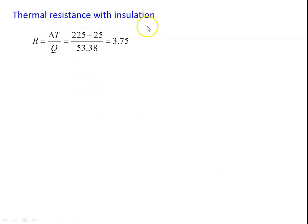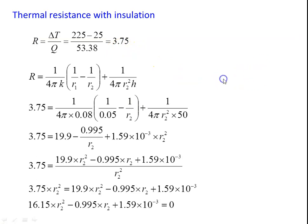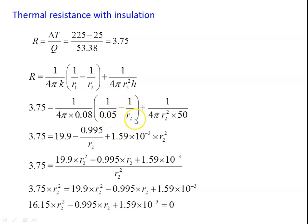The thermal resistance with insulation: R = ΔT/Q = (225 − 25)/53.38 = 3.75 K/W. The total resistance equals R_insulation + R_convection: R = (1/4πk)(1/r₁ − 1/r₂) + 1/(4πr₂²h). Substituting numerical values: 3.75 = (1/4π × 0.08)(1/0.05 − 1/r₂) + 1/(4πr₂² × 50), where r₂ is the unknown outer radius of the insulation. Simplifying this yields a quadratic equation.